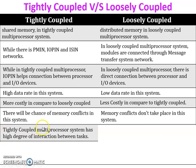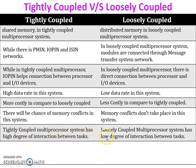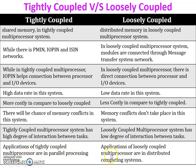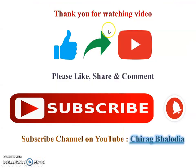A tightly coupled multiprocessor system has a higher degree of interaction — there is strong interaction between tasks. A loosely coupled system has a low degree of interaction between tasks. Applications of tightly coupled multiprocessors are in parallel processing systems, while loosely coupled multiprocessors are used in distributed computing systems.